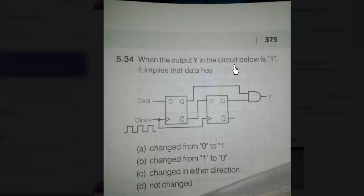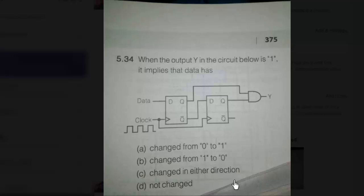When the output Y in the circuit below is 1, it implies that data has — there are 4 options. According to option A, data has changed from 0 to 1. According to option B, data has changed from 1 to 0. According to option C, data has changed in either direction — 0 to 1 or 1 to 0. And according to option D, the data has not changed.